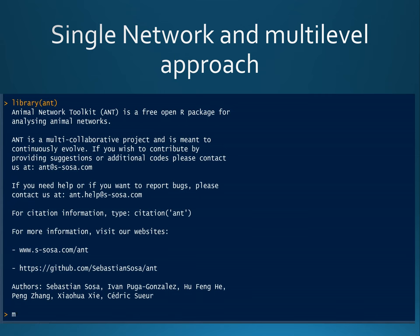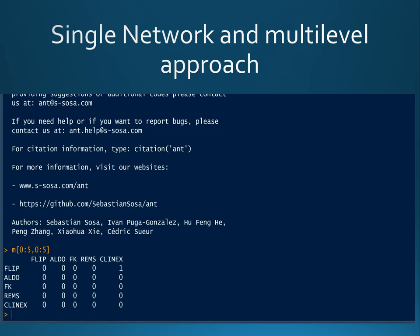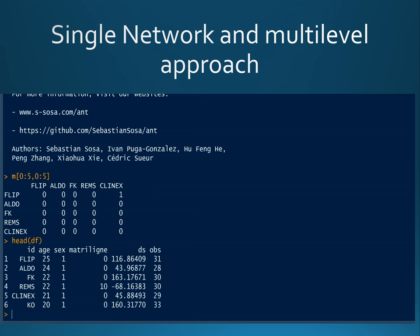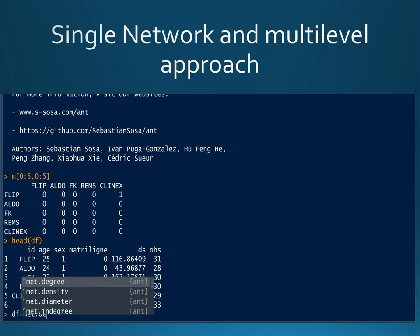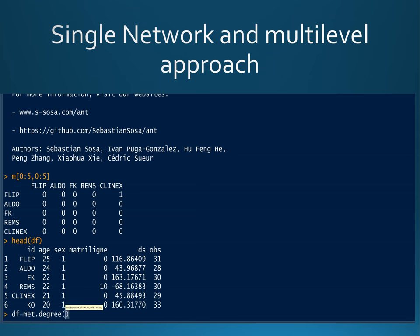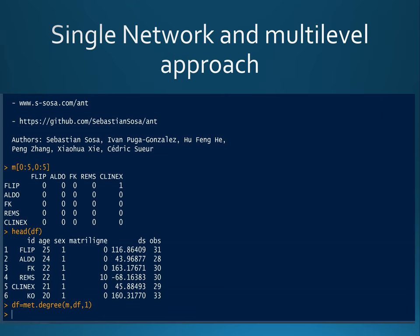ANT works with two types of objects. The first one is a matrix for individual interactions. The second type of object is a data frame that stores individuals' characteristics, such as age, sex, etc. We can compute node metrics by the function met.degree, and here we will compute the degree of individuals, the number of partners. You do that by inputting the matrix and the data frame.